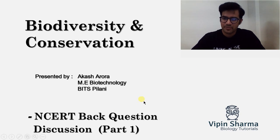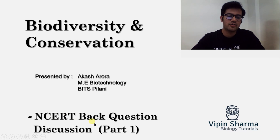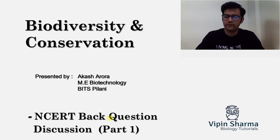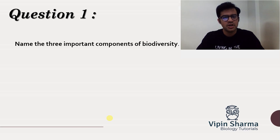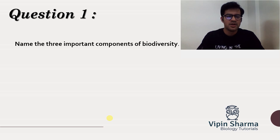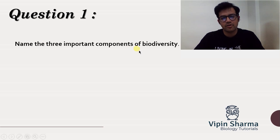Hey guys, this is Akash Shai for Weapon Sharma Biology Tutorials. Today I'm going to talk about your NCRT back question discussions. This is part one, so there are a total of 10 questions and I'll be discussing them in two parts — five in each. These questions are a pretty much sort of summary of your whole chapter, so it will be helpful for your concept building and board preparations as well. The first question is: name the three important components of biodiversity.